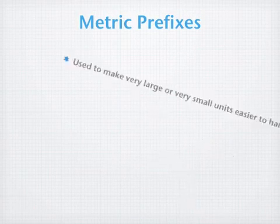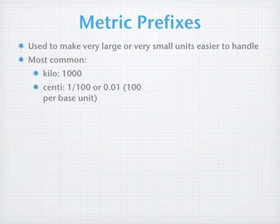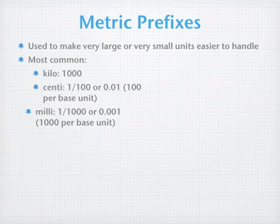Lastly, let's take a quick look at symmetric prefixes. We use these to make very large or small numbers easier to handle. Most commonly, we're going to use kilo, means a thousand kilograms, is a thousand grams, kilometers is a thousand meters. Centi means one one-hundredth, or there's 100 per base unit, so a centimeter is one one-hundredth of a meter, and there's a hundred centimeters in a meter. Millie is one one-thousandth, there's one one-thousandth of a meter in a millimeter, or there's a thousand milliliters in a meter.